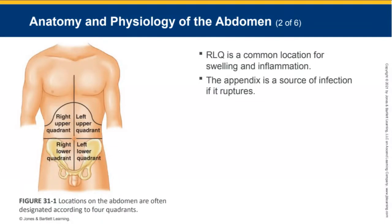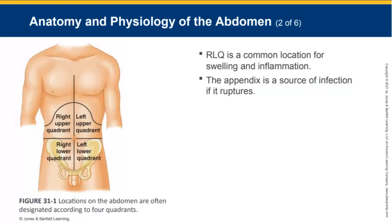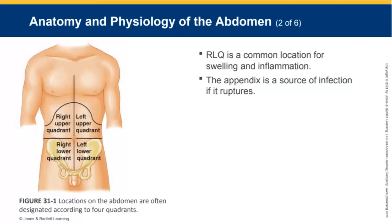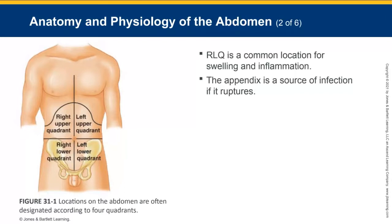Ensure you know the diagram showing the different quadrants. The right lower quadrant is a common location for swelling and inflammation. Once you have a patient with abdominal pain and you palpate and recognize it's right lower quadrant pain, your biggest index of suspicion is that the appendix is the issue — possible appendicitis.